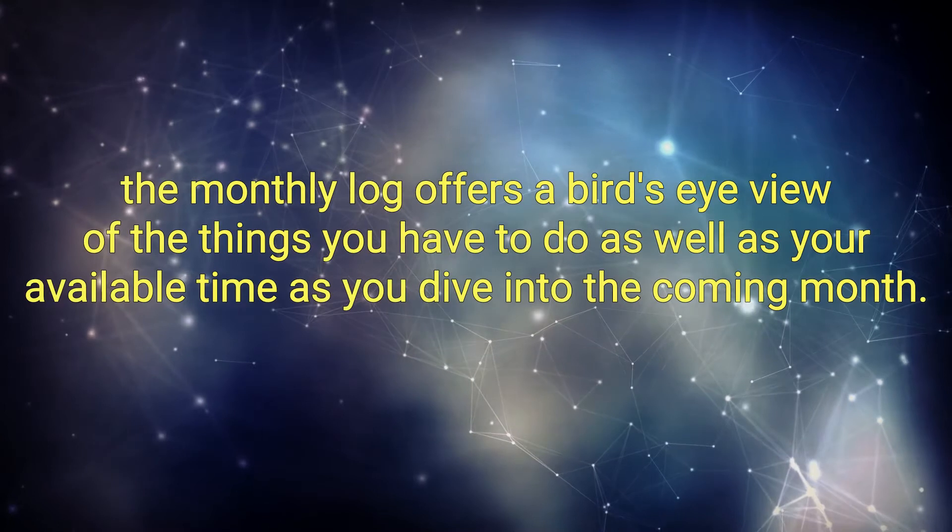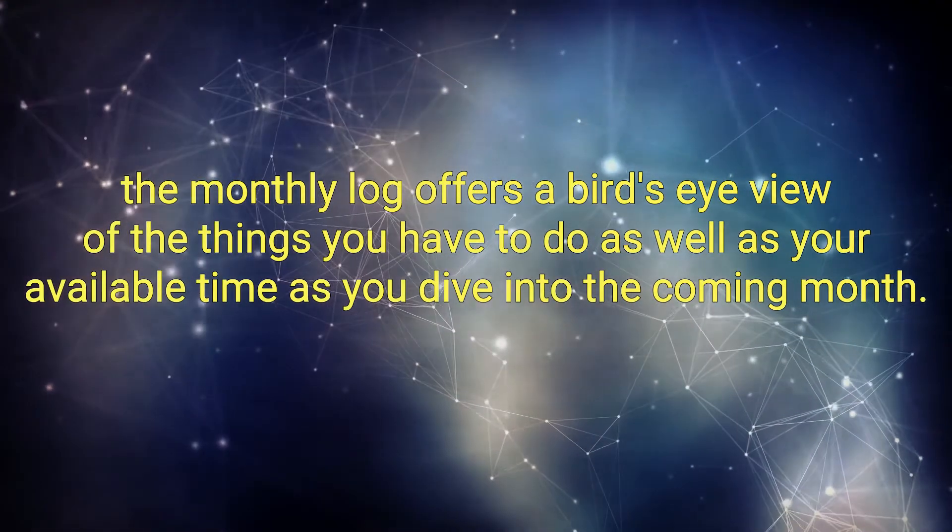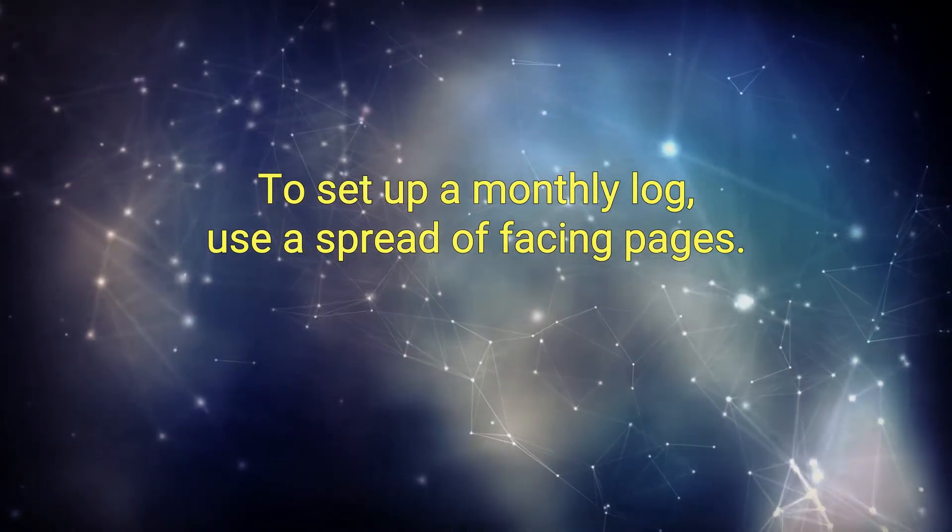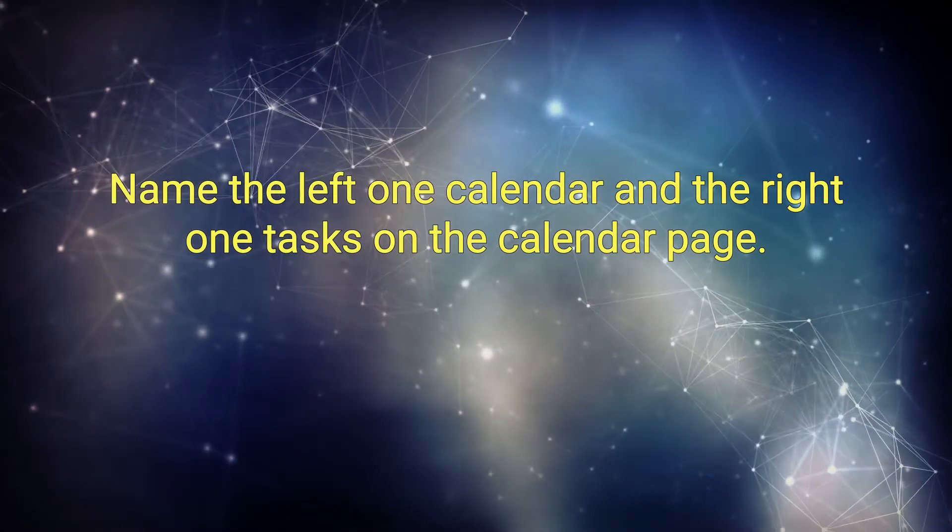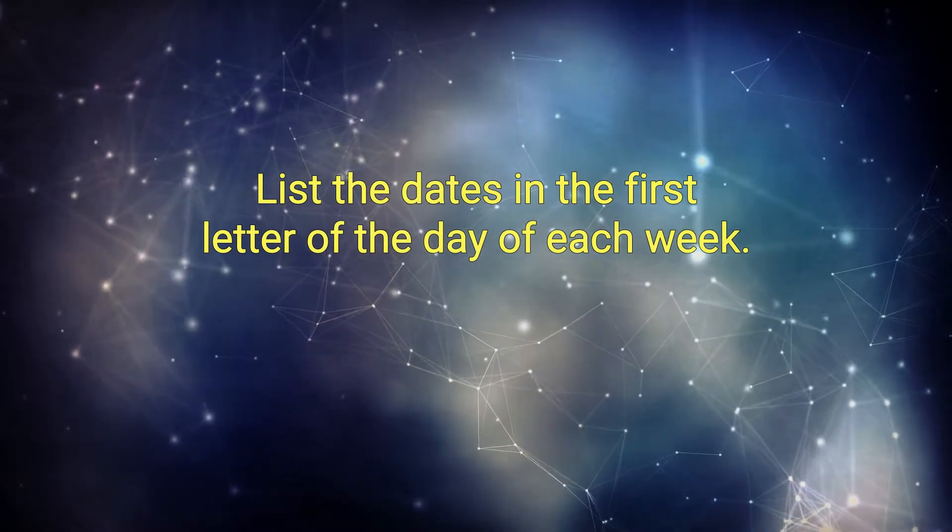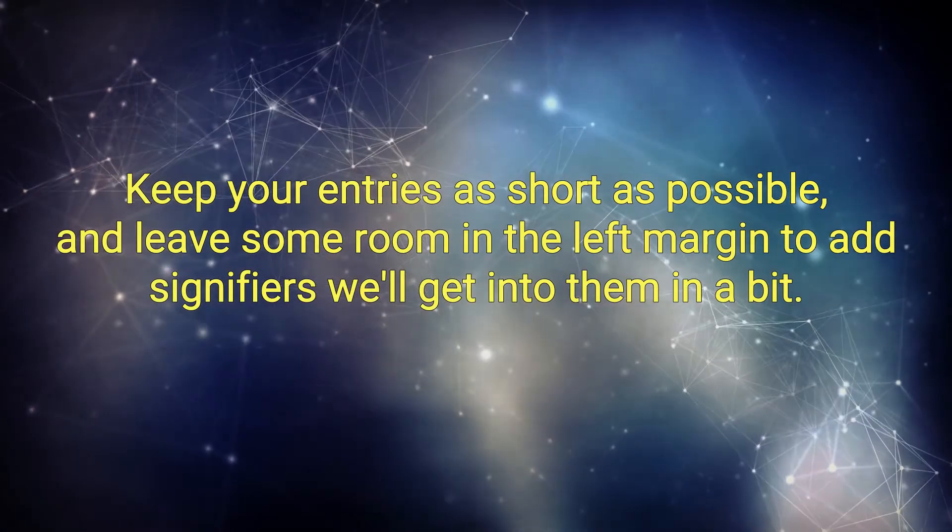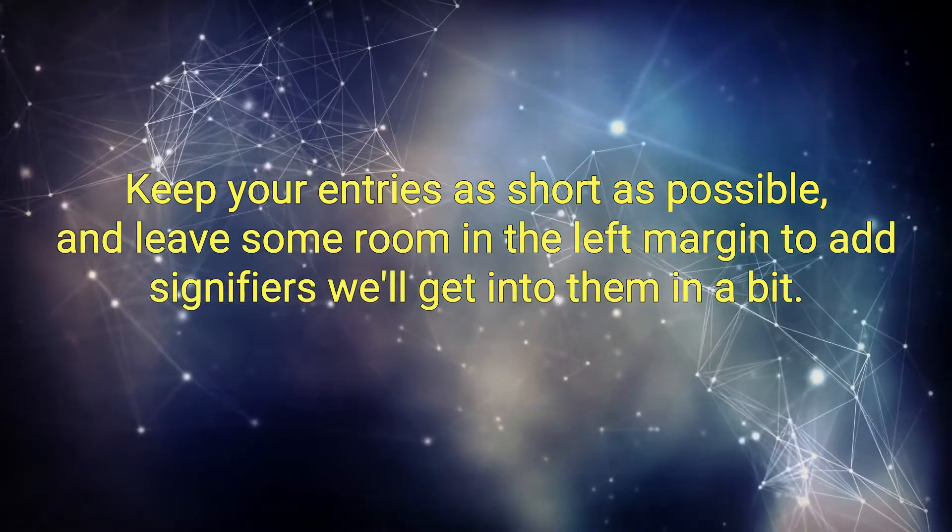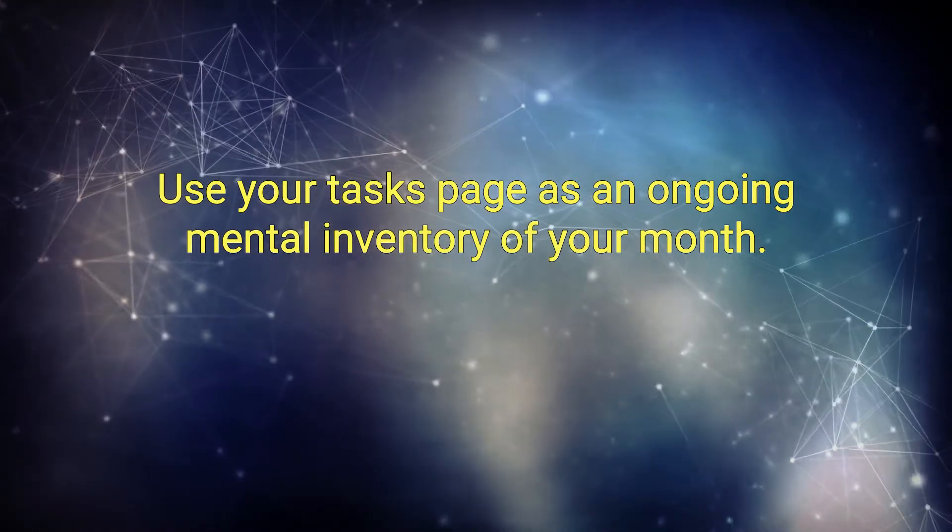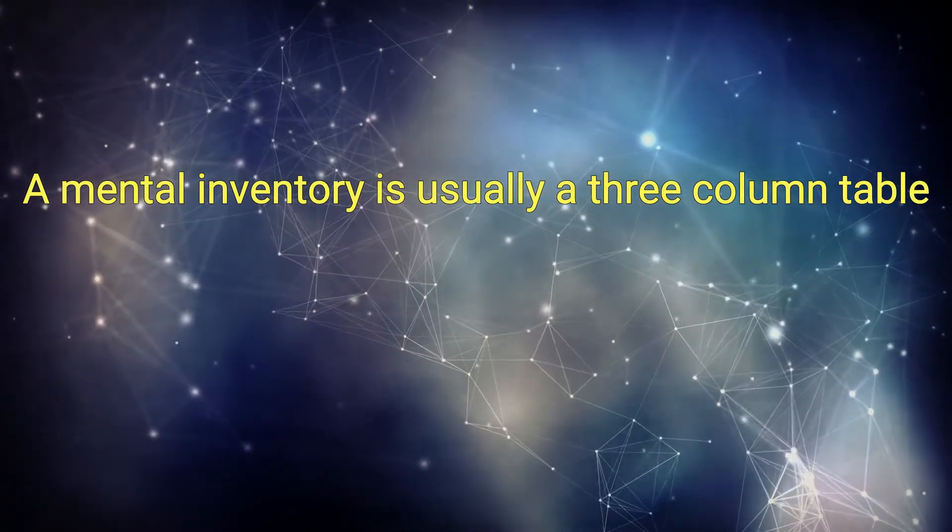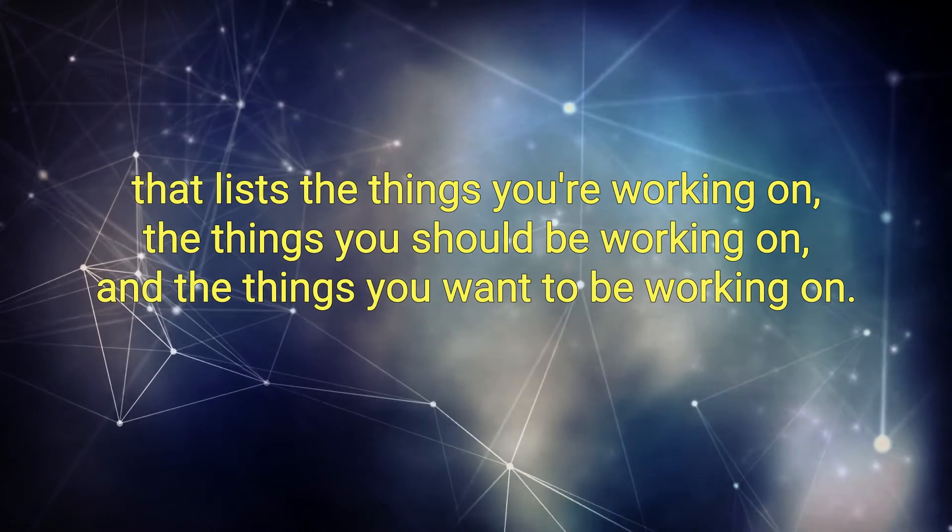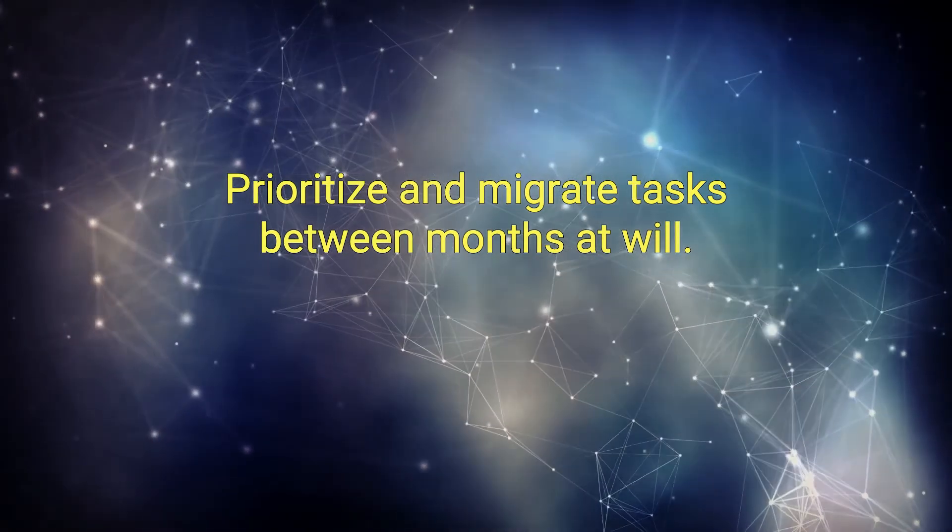Speaking of, the monthly log. The monthly log offers a bird's eye view of the things you have to do as well as your available time as you dive into the coming month. To set up a monthly log, use a spread of facing pages. Name the left one calendar and the right one tasks. On the calendar page, list the dates and the first letter of the day of each week. Keep your entries as short as possible and leave some room in the left margin to add signifiers. Use your tasks page as an ongoing mental inventory of your month: a three-column table that lists the things you're working on, the things you should be working on, and the things you want to be working on. Prioritize and migrate tasks between months at will.